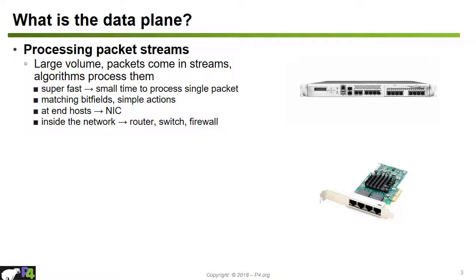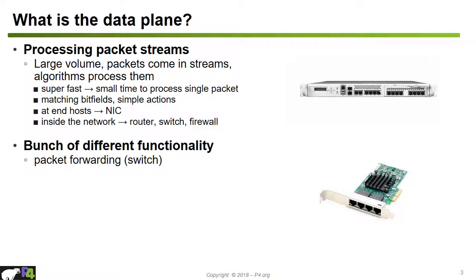There are a number of different functionalities we can distinguish for what data plane operations are exercised upon packets. For example, a switch will simply forward or drop packets. A firewall implements access control by checking a list and determining if a given sender is allowed to access a given service. Tunneling is widely used in wireless networks and mobile packet core networks to implement mobility solutions.